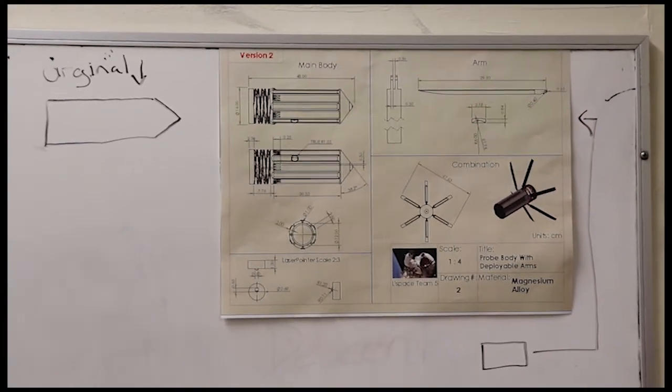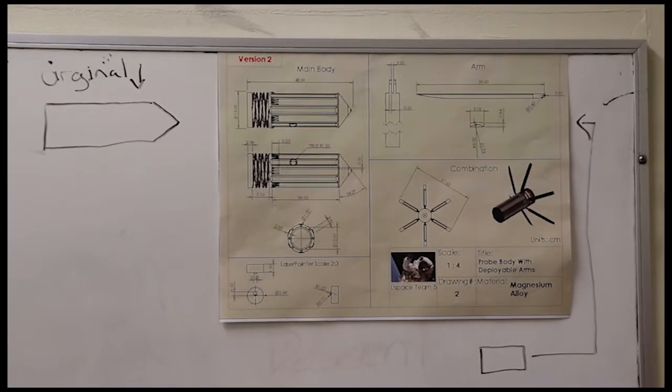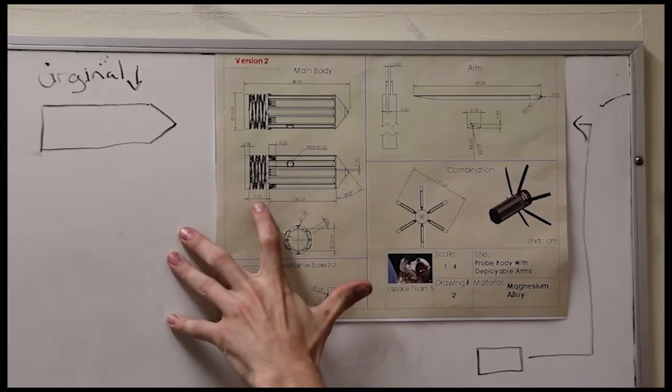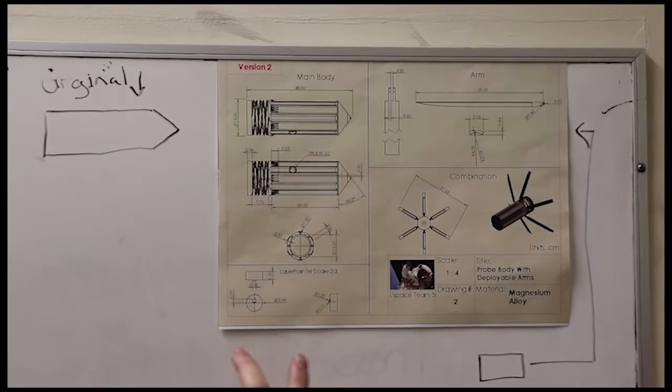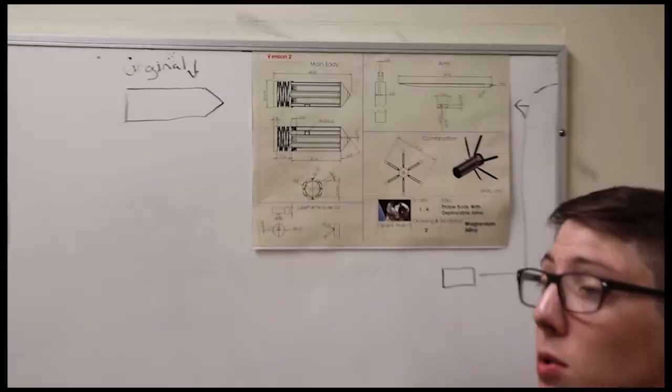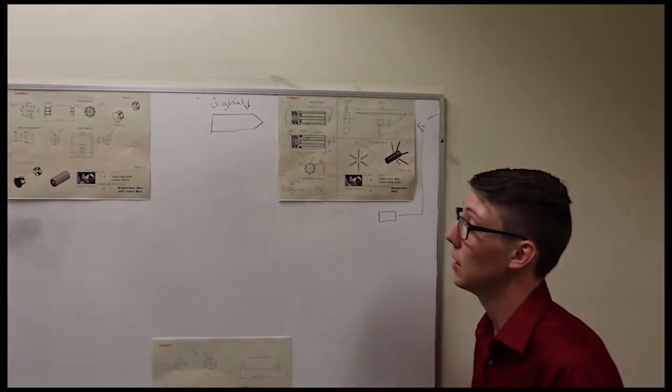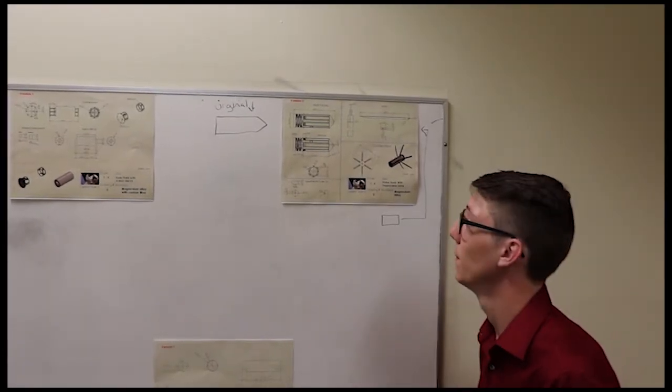Another one of the main changes that has really strengthened the design and also helped with our weight is this 7.76 cm area right here, where we've removed essentially the body and added a spring mechanism. That'll help absorb most of the impact, and it dropped our weight drastically, so we were able to make that requirement.